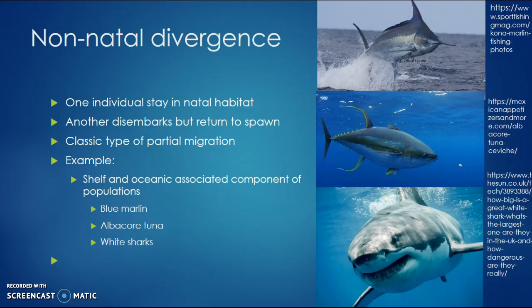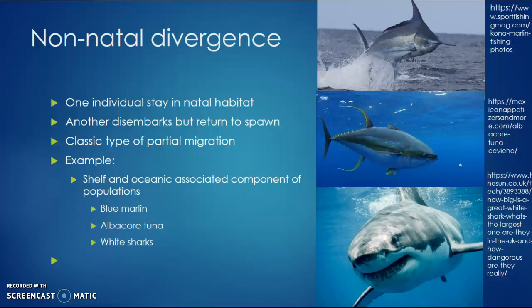Nonnatal divergence is when one individual stays in the natal habitat while another departs but returns to spawn. These are classic types of partial migration. Examples include blue marlin, albacore tuna, and white sharks, because they have both a shelf-associated and oceanic-associated component of their population.